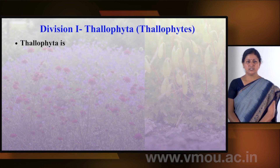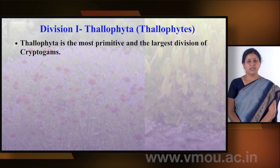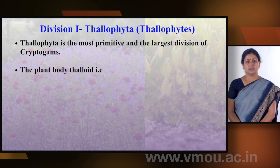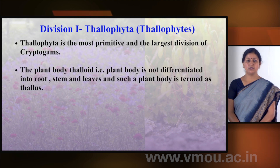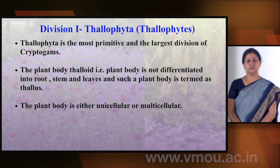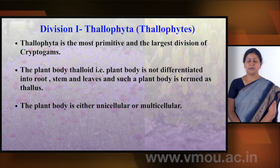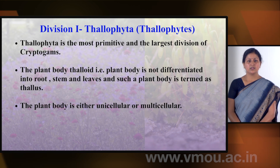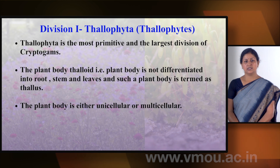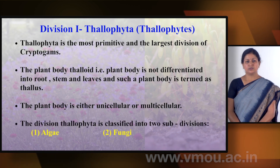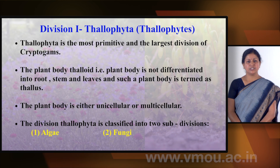Thallophyta is the most primitive and largest division of Cryptogamy. The plant body is called thaloid, meaning it is not differentiated into root, stem, and leaves — this type of plant body is called a thallus or thaloid. The plant body can be unicellular or multicellular. Thallophyta is divided into two sub-divisions: algae and fungi.